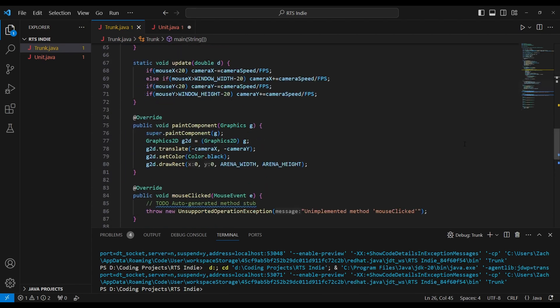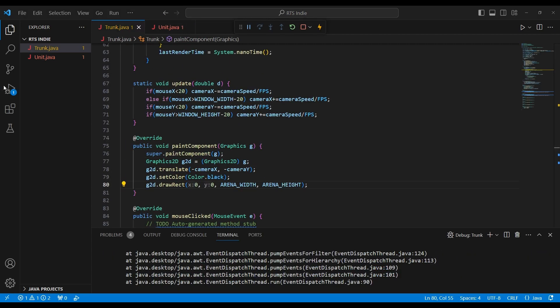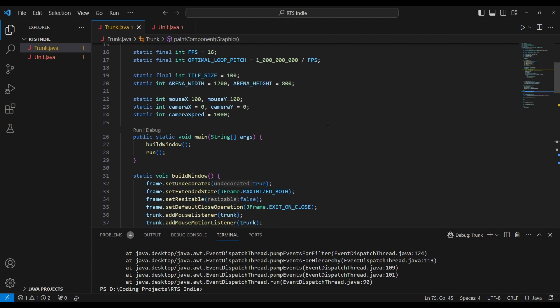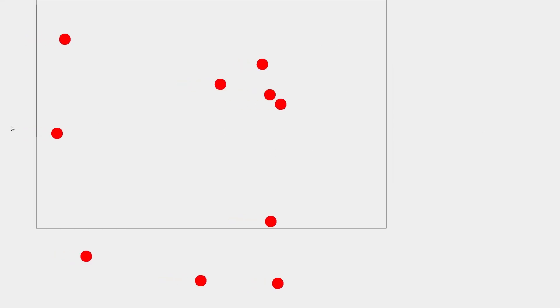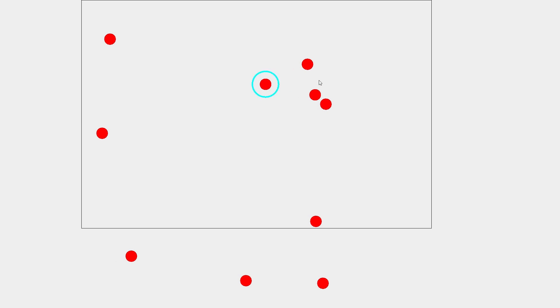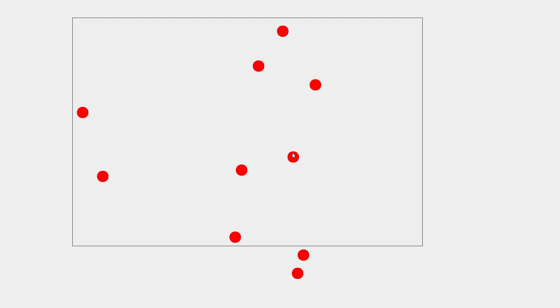Now it's time to move on to the units — I'm in familiar territory: making entities inside ArrayLists and programming a bunch of variables. Getting some units made was easy, but I can't control them yet. Typically in an RTS, you left-click a unit to select it. I just measure the distance between the mouse click and the unit, and if it's close enough, the unit gets selected. Players right-click a spot to direct the selected unit toward that spot.